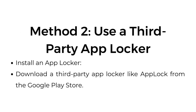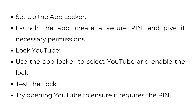Method 2: Use a third-party app locker. Install an app locker — download a third-party app locker like AppLock from the Google Play Store. Set up the app locker by launching the app, creating a secure PIN, and giving it the necessary permissions. Then use the app locker to select YouTube and enable the lock.